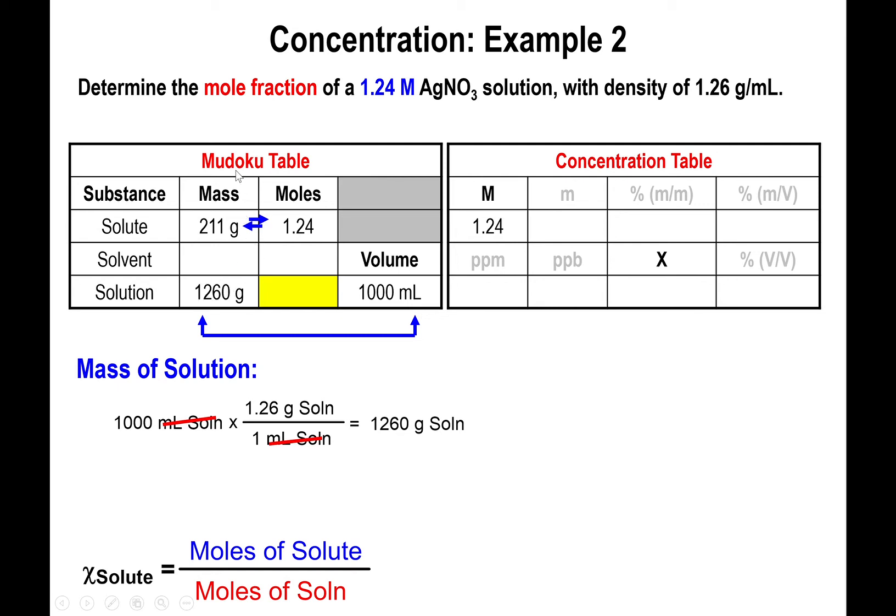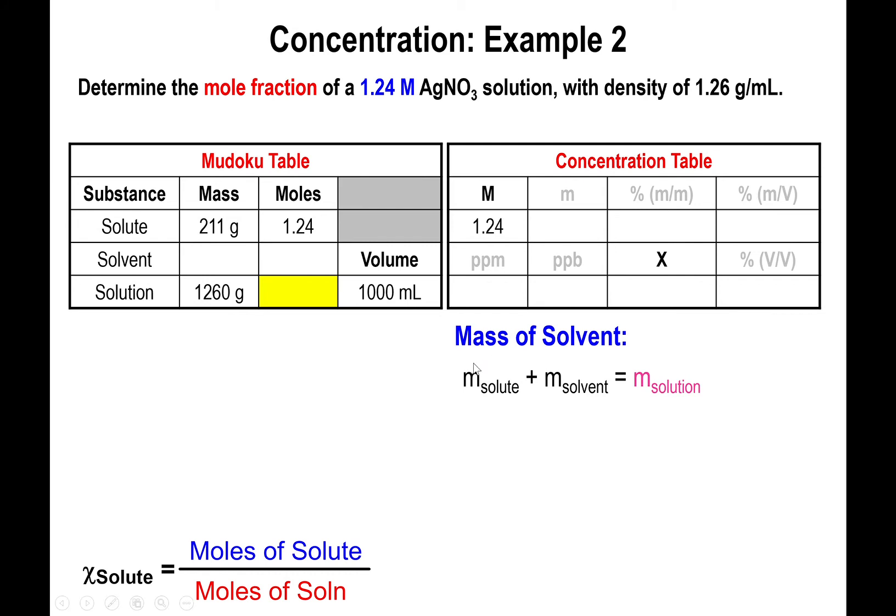Now you can see we got two out of the three members of the mass column, so we can now find the value for the missing member, specifically the solvent. For the solvent, we need to remember that mass of solute plus mass of solvent equals mass of solution. So to get the mass of the solvent, subtract the mass of the solute from the mass of solution. That means 1260 minus 211, which gives you 1049 grams of solvent.